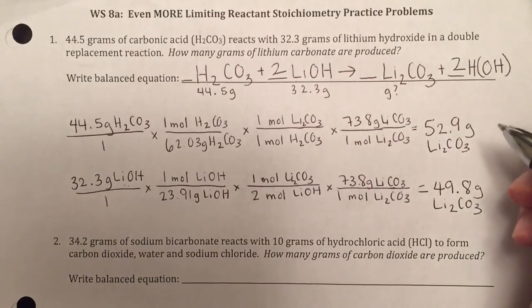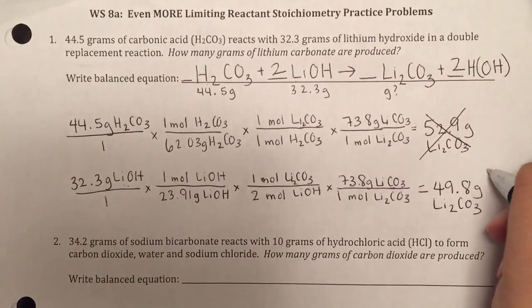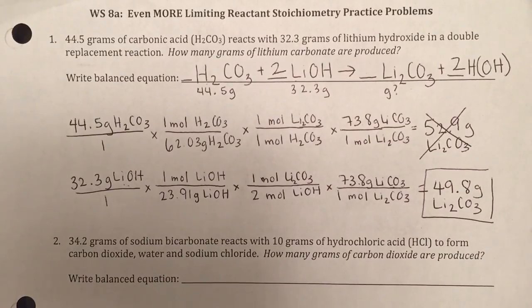So what that tells me is that the lithium hydroxide is my limiting reagent, or reactant. And so this number is not going to matter, and this is my answer. So I make 49.8 grams of lithium carbonate, and the lithium hydroxide is my limiting reactant.